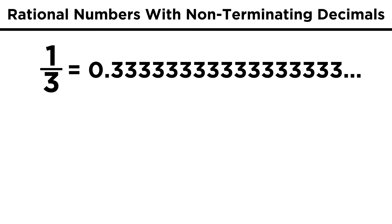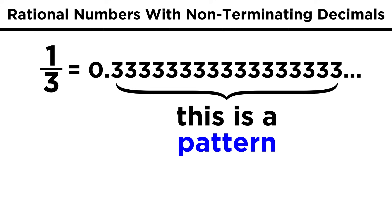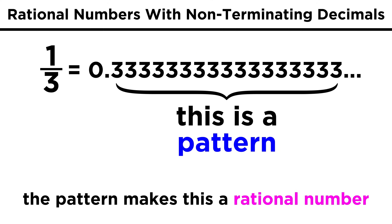Let's quickly mention that there are numbers with non-terminating decimals that are actually rational. Take for example one third. If we convert this to a decimal, we get zero point three, with the three repeating forever. Although the threes go forever, this is a pattern. When decimals extend forever, but in a pattern like this, they are actually rational, because they can indeed be expressed as the ratio of two integers, in this case one over three.